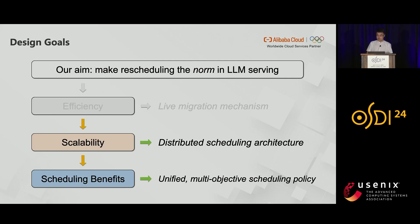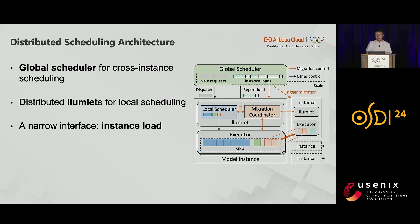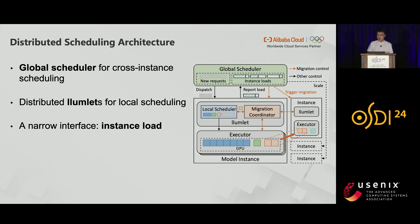With live migration as the mechanism foundation, Lumnix improves scalability and scheduling benefits of migration. Continuous rescheduling across instances implies higher scheduling pressure than traditional schedulers, which could be a bottleneck if implemented in a centralized manner. Lumnix uses a distributed scheduling architecture with a global scheduler for cross-instance scheduling decisions, and a set of distributed schedulers called LumnLets co-located with model instances to handle intra-instance scheduling. The global scheduler makes all scheduling decisions based only on the memory loads of instances reported by LumnLets — it does not need to watch the status of every single running request.